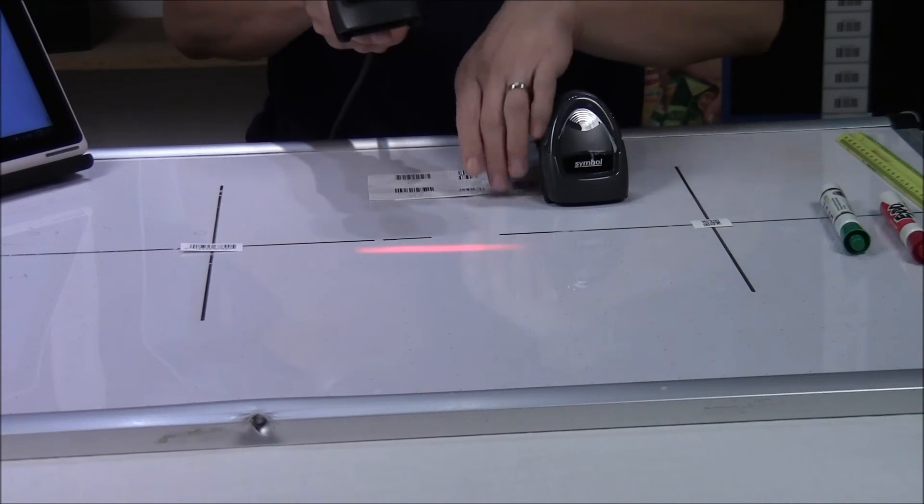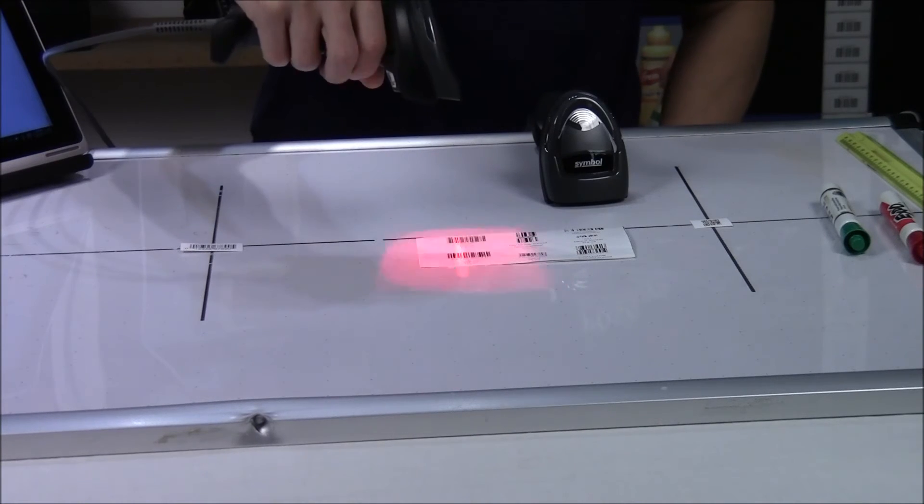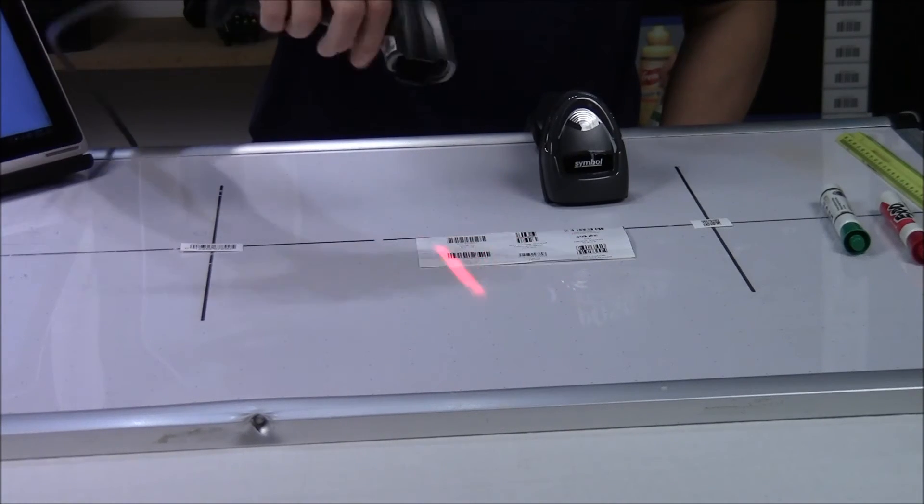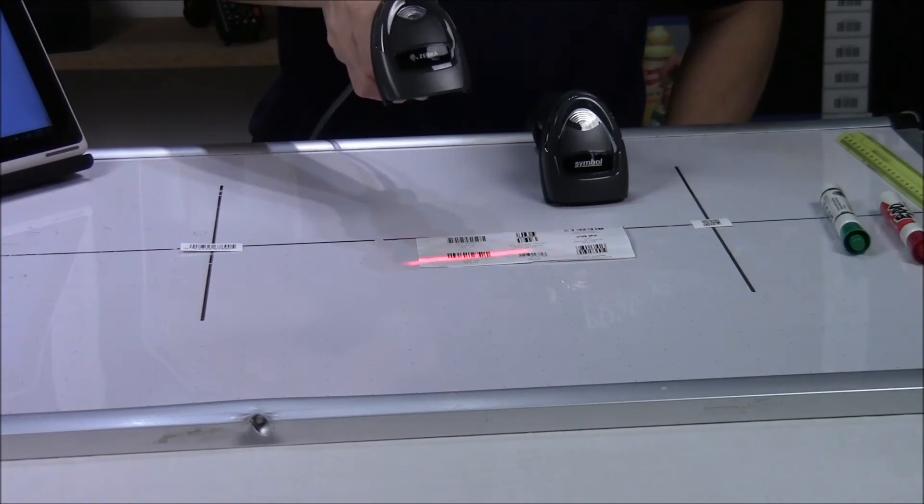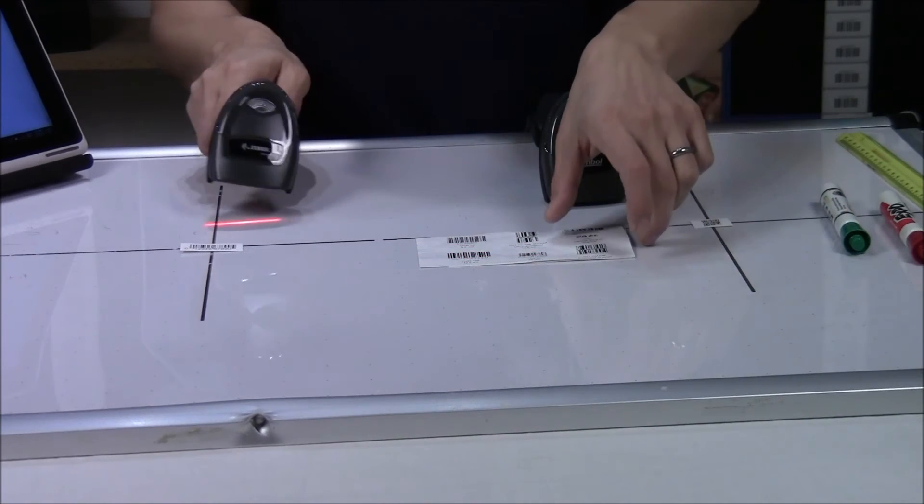But this is an omnidirectional scanner. So, you, of course, can scan across the bars. But, you can also scan perpendicular at an angle. Whatever you want. It doesn't really matter. The line is there just to kind of tell you where the focus is.